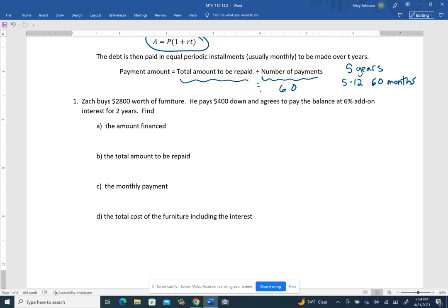And then he's going to pay the balance, which would be the remaining amount at 6% add on interest for two years. So paying 6% simple interest, and he's going to do that for two years.